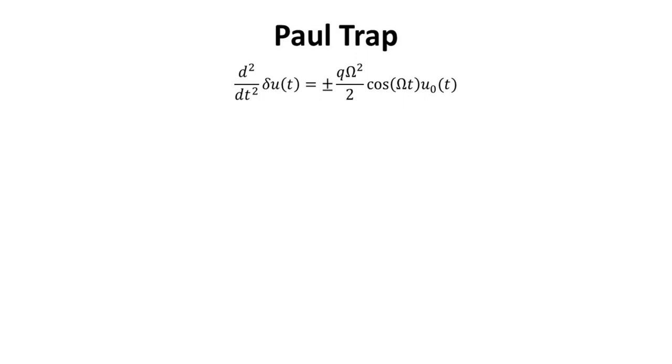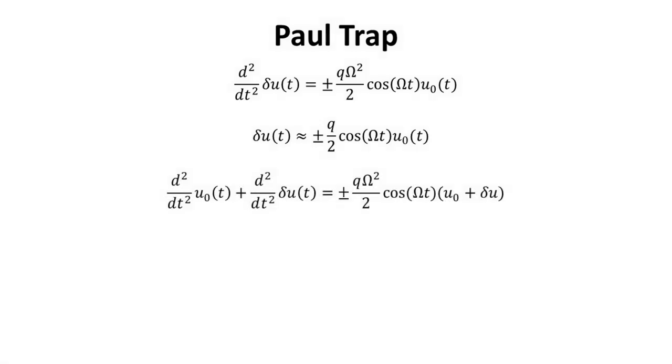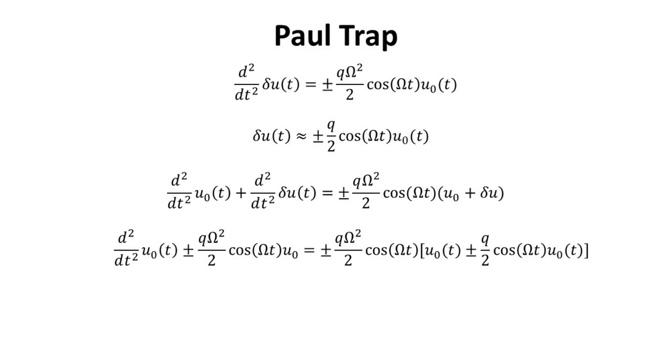Now, since we're assuming the micro-motion is much faster, we can consider U0 of t as approximately constant and perform a double integral on both sides of this equation. Then, delta U of t is approximately equal to this expression. Now, we repeat here the original separated Mathieu equation. Substituting the expression for delta U of t that we have just found, we arrive at the following, where we are left with only the slow-motion, U0 of t.